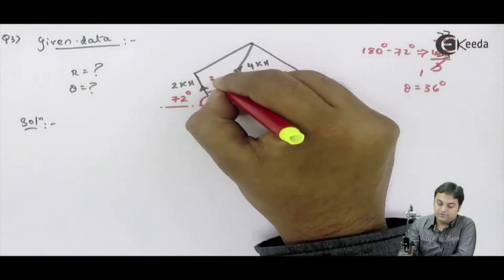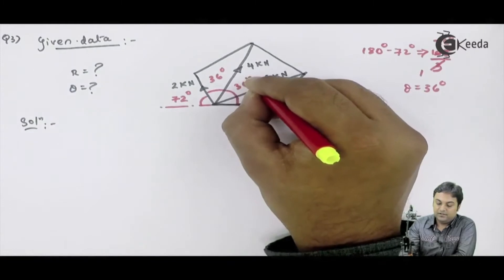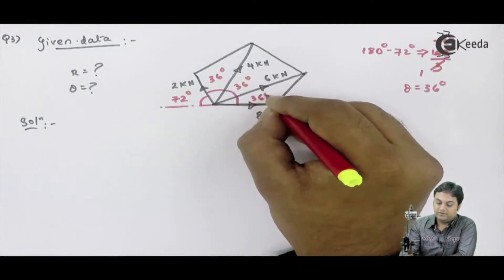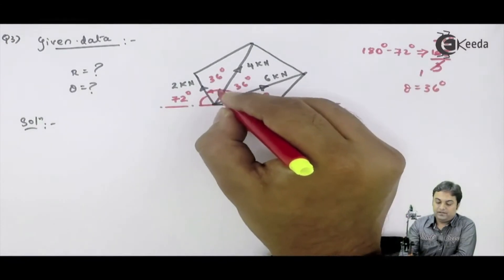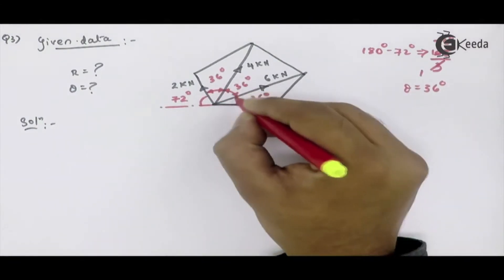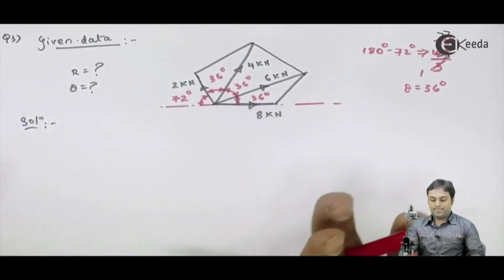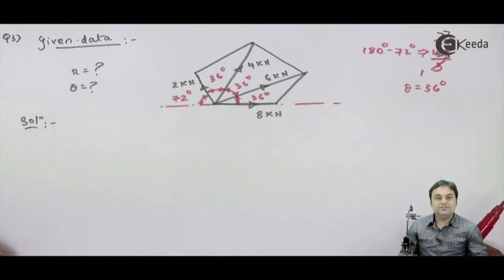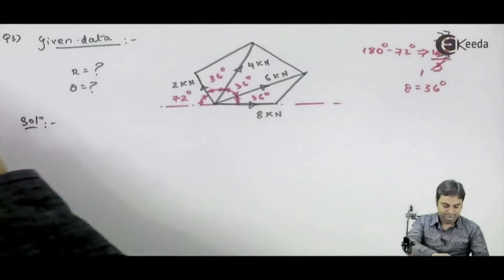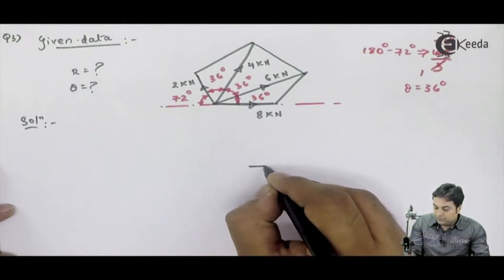Here it is 36°, here 36°, and in this case it is also 36°. After marking all the angles, I will convert this pentagon problem into the similar concurrent forces problem, converting it into a force system.